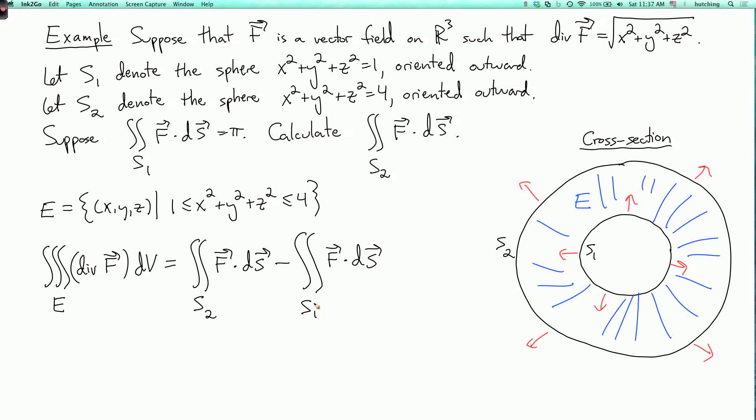So here, this integral is oriented outward from the center. But that's the wrong orientation to use in the divergence theorem, because the divergence theorem should be outward from E, which would be inward towards the center. So that's why I have to subtract it, because when you switch the orientation, you switch the sign of the integral.